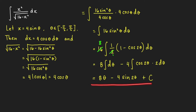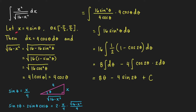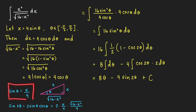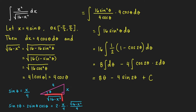To write our answer in terms of x, we draw a right triangle associated with our substitution. From x equal to 4 sine theta, we get sine theta equals x over 4. By SOHCAHTOA, if theta is our acute angle, the opposite side is x and the hypotenuse is 4. The adjacent side is therefore square root of 16 minus x squared. From this right triangle, we can find all trigonometric function values of theta.